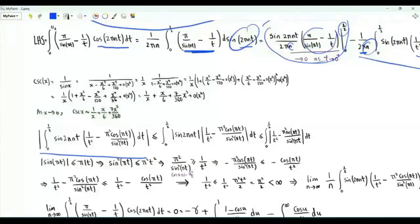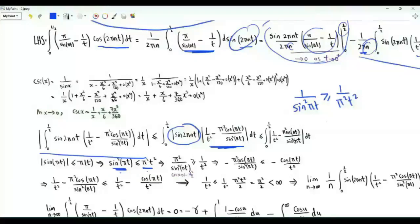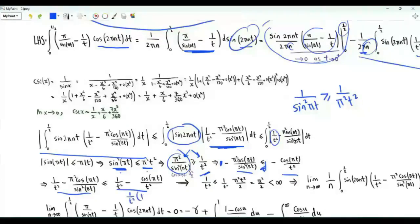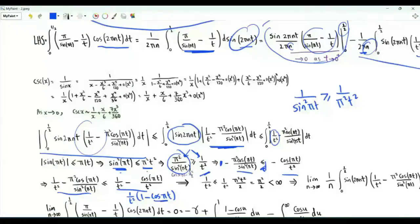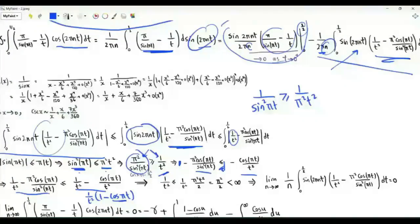We can show the integral has a finite value, so this part also goes to zero as n tends to infinity. The magnitude of the integral is upper-bounded by the integral of the magnitude (triangle inequality). The magnitude of sine is bounded by one. Using the bound that sin²(πt) ≥ (1 − cos(πt)) and that one minus cos(πt) ≤ π²t²/2, the integral is bounded above by π²/2 times the integral from zero to one half. This quantity is finite, so dividing by n and taking the limit gives zero.